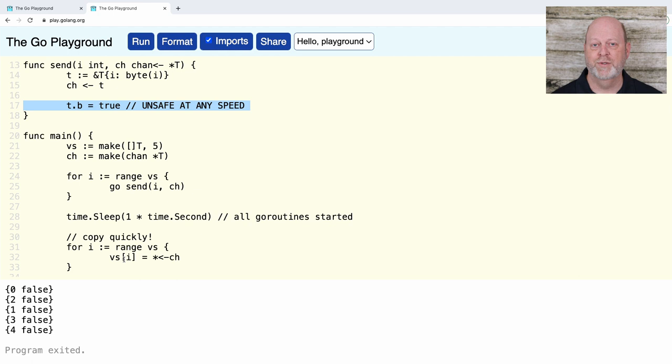Now, let me change this to have a buffered channel, and I'm going to make it a buffer of space 5 because I have 5 go routines. Let's run that program. Every single one of them is true. Why? Well, now my sends are non-blocking. So, my main program sleeps for a second, which is like a million years in computer time. So, all of my sends happen. I put 5 values in the buffer, but those are pointers. And I still have a pointer in send to the thing that's being pointed at, which I modify.